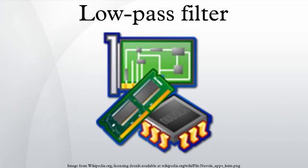The meanings of low and high — that is, the cut-off frequency — depend on the characteristics of the filter. The term low-pass filter merely refers to the shape of the filter's response. A high-pass filter could be built that cuts off at a lower frequency than any low-pass filter. It is their responses that set them apart. Electronic circuits can be devised for any desired frequency range, right up through microwave frequencies and higher.